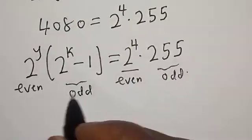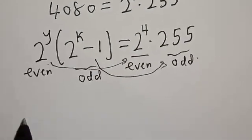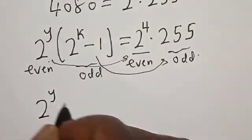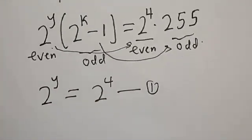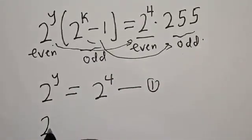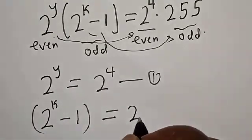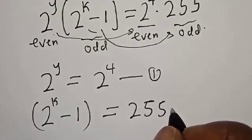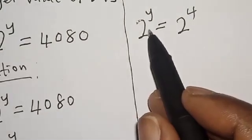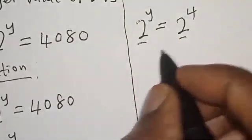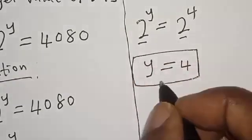By comparing the even and odd parts on both sides, 2 raised to power y equals 2 raised to power 4 — call this equation 1. Since they have the same base, y is equal to 4. That is the value of y.